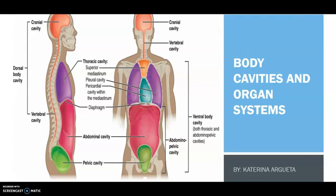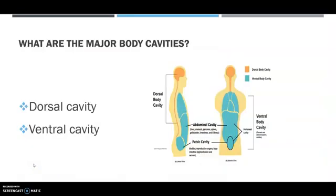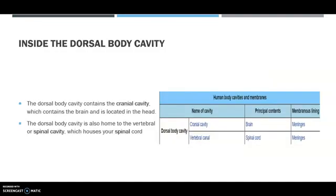Many internal organs lie in the membrane-lined body cavities. Body cavities help protect the organs from external movement. There are two sets of internal body cavities called dorsal and ventral cavities. These cavities are closed and provide different degrees of protection to the organs within them.